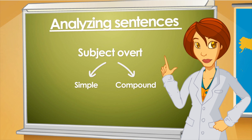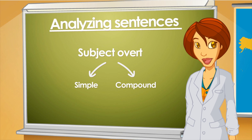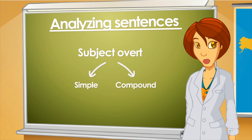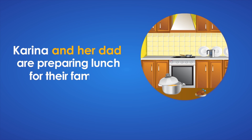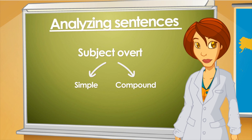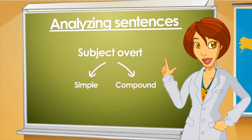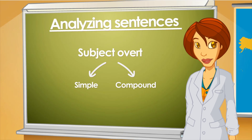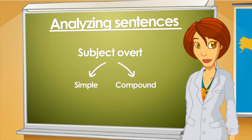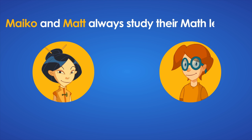Sometimes the subject presents two noun phrases or more — those are clauses with a compound subject. Who can change the previous sentence so that its subject is compound? 'Karina and her dad are preparing lunch for their family.' Bear in mind that the subject needs to be at the beginning of the clause; it cannot be in the middle or at the end of it. Who can provide another example? 'Michael and Matt always study their math lessons.'